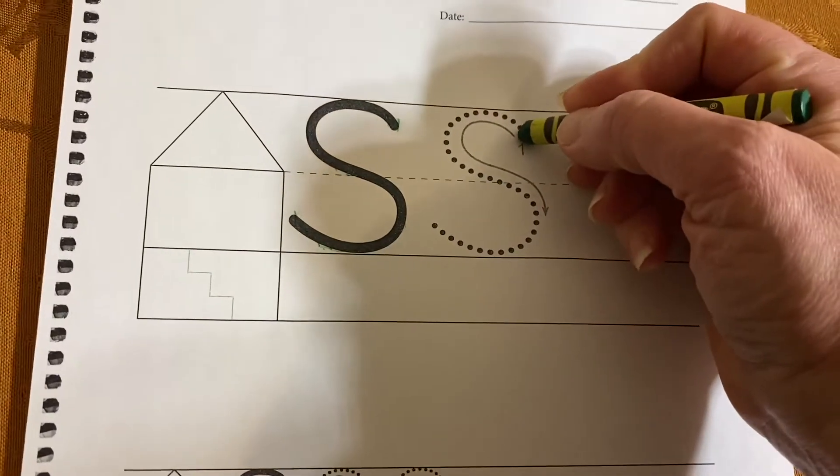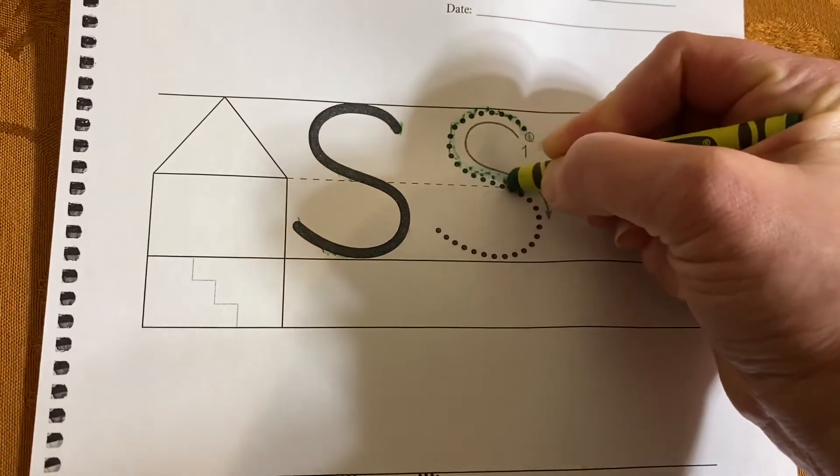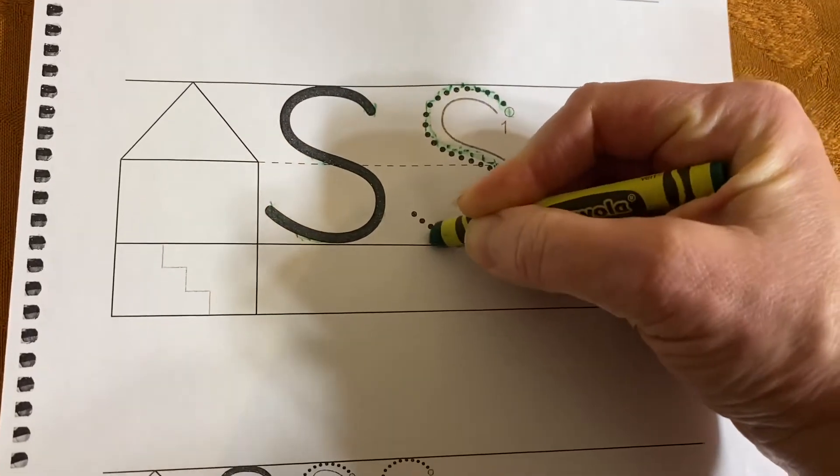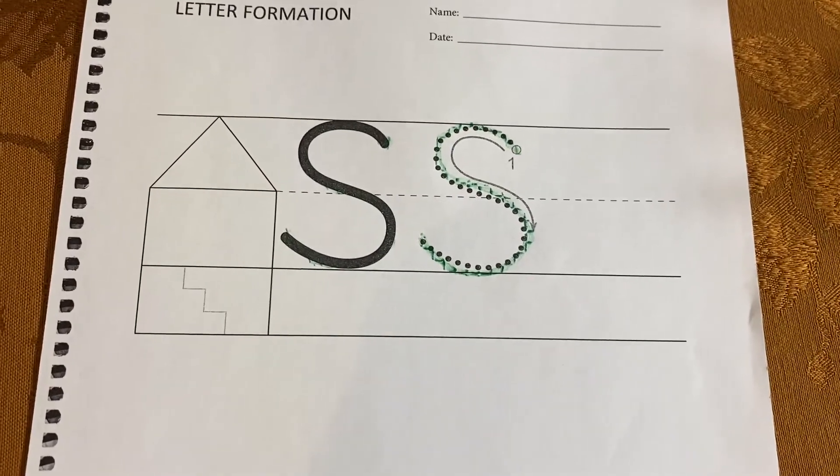Are you ready to try? Start at the two o'clock dot, touch the top, scoop around, scoop around the other way, touch the bottom and come up. There is your uppercase S.